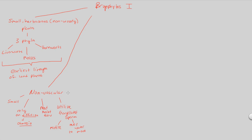Now we're going to look at the moss life cycle, also known as the bryophyte life cycle. Focus on the big picture as we go through this. We'll start at the sporophyte stage. A sporophyte is diploid in its structure and produces spores via meiosis. So a moss in the sporophyte stage makes haploid spores.